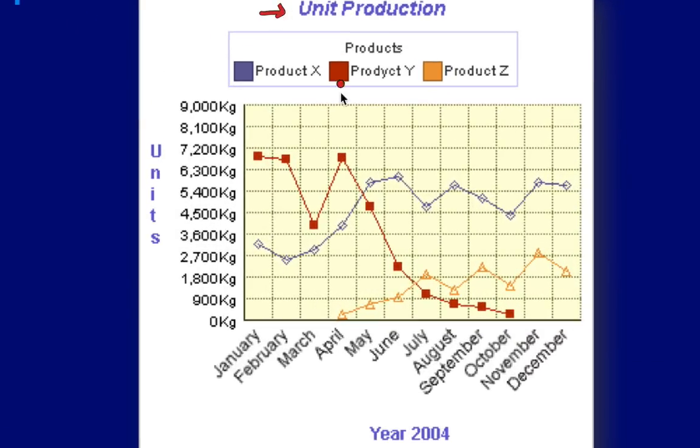Who knows of some company producing a certain product X, product Y, and product Z. If we take a look at our two axes, we have the months of the year down here in 2004. And here we have units of product from zero all the way to 9,000 kilograms. And what we're examining these graphs for here is something significant happening.